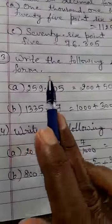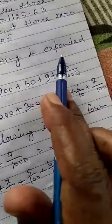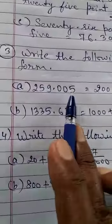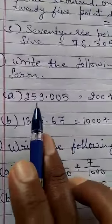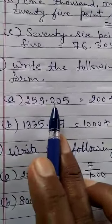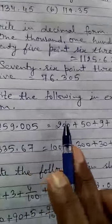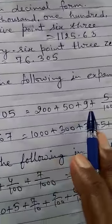Now question number 3: write the following in expanded form. 259.005 - this is the decimal number and you have to write this into expanded form. First of all, you will expand the whole number 259 as 200 plus 50 plus 9.